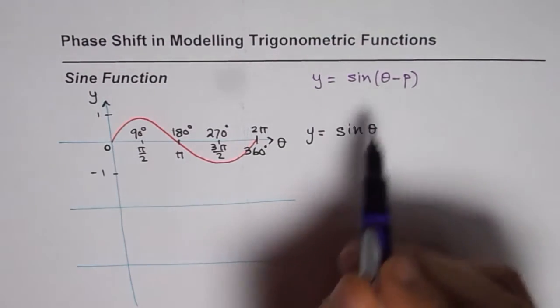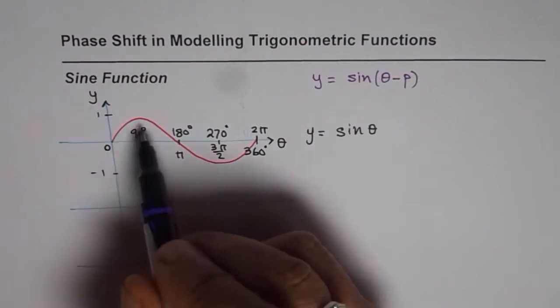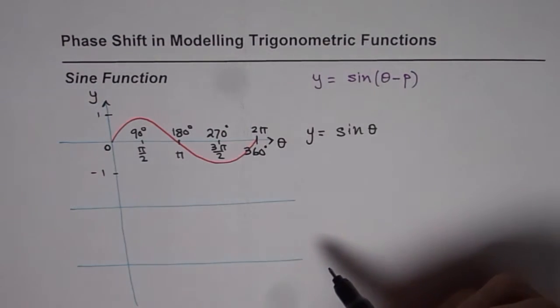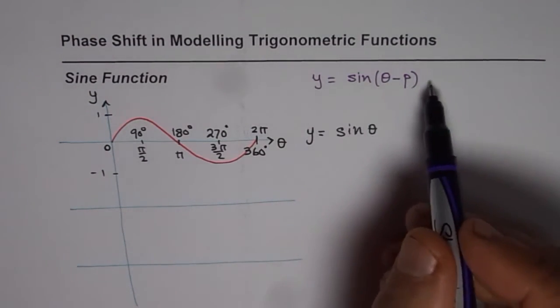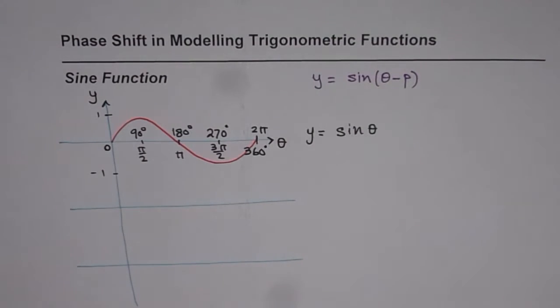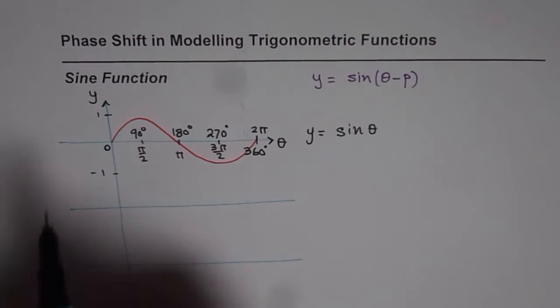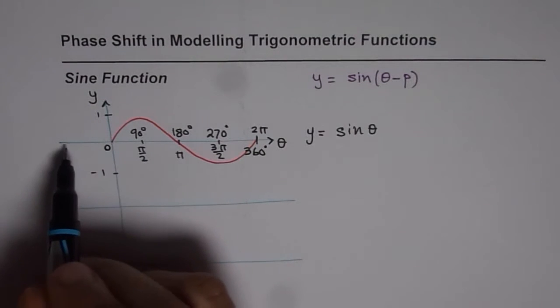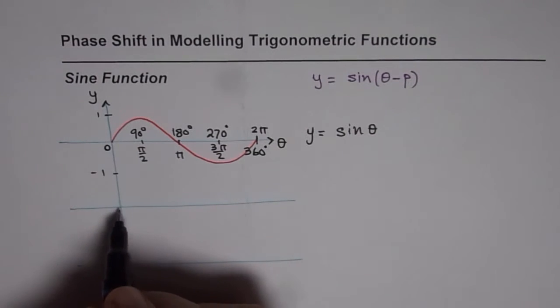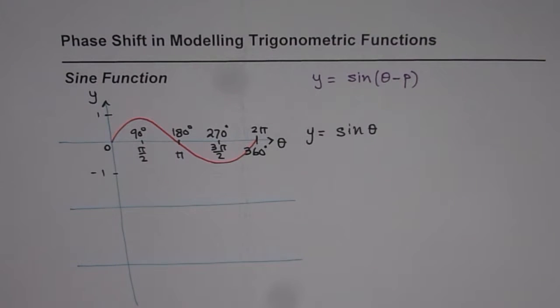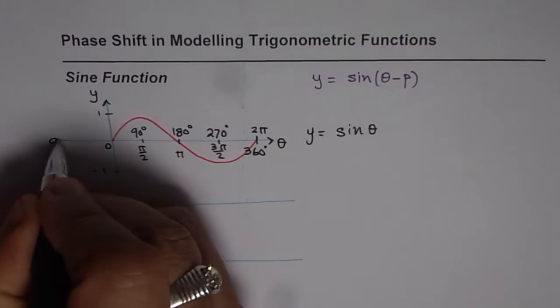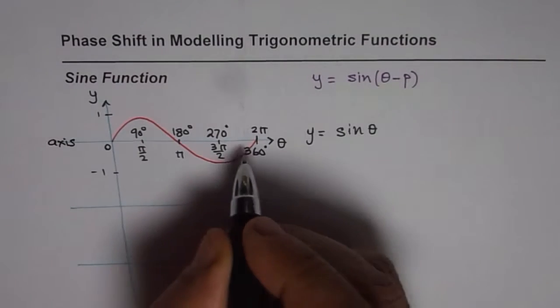We are also not considering any vertical translations. Now phase shift really means that the starting point of sine wave normally is on the axis, do you see this axis? So that is the axis. Let me write down here so that becomes absolutely clear to you how to correctly find.